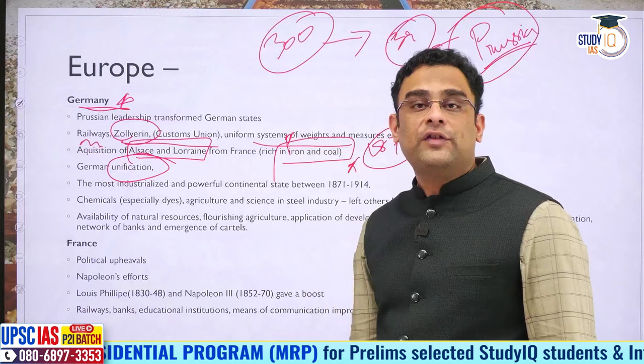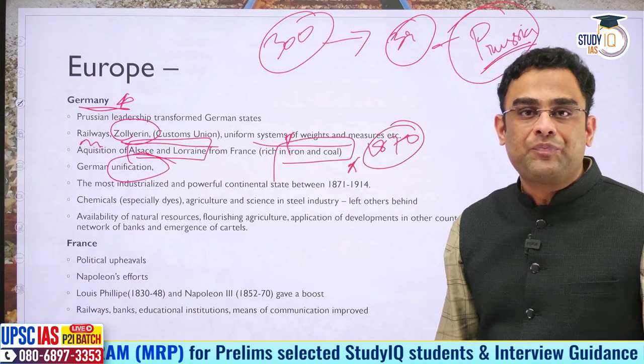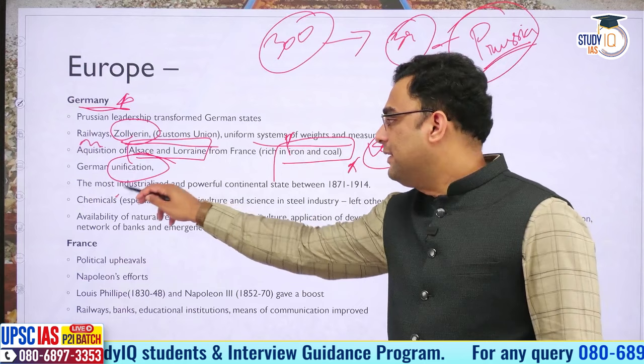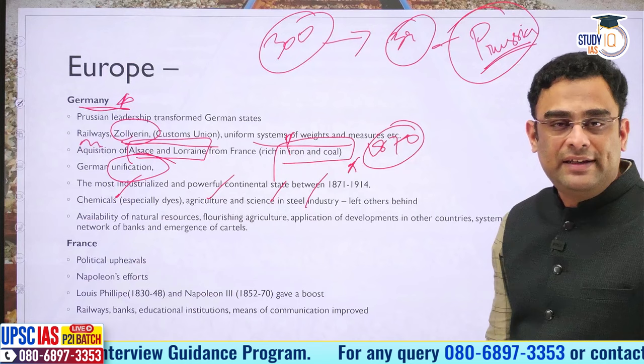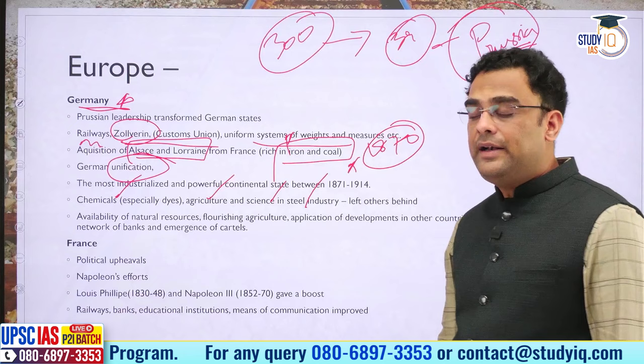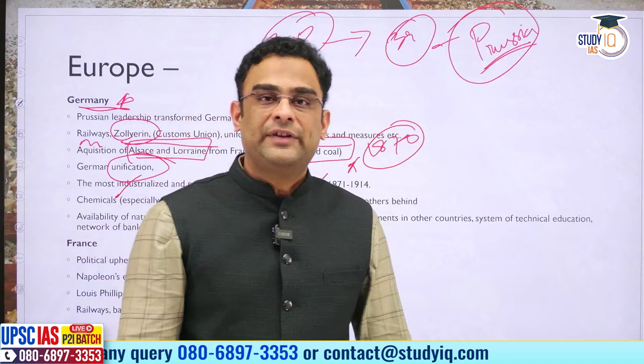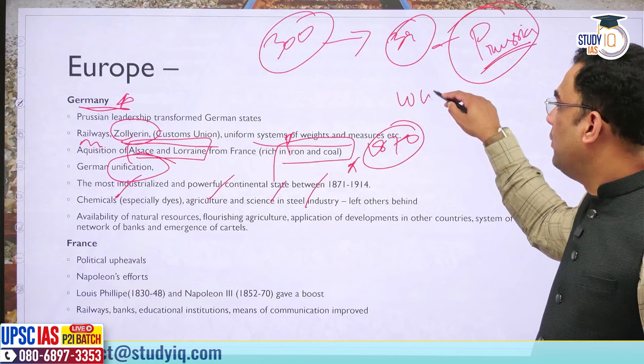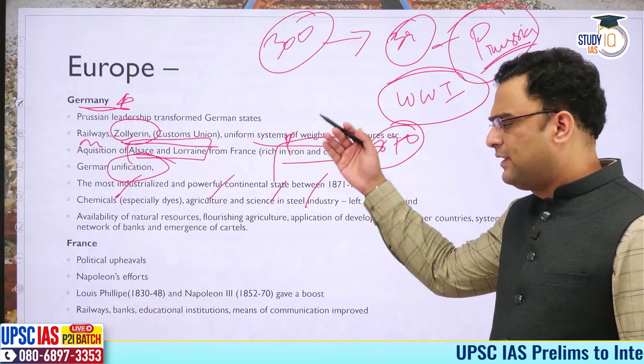Alsace and Lorraine were snatched from France in 1870, giving Germany access to iron and coal crucial for industrial revolution. After unification in 1870, Germany focused all its energy on rapid industrialization, and by the 20th century had become a leading industrial power rivaling Britain, overtaking it in chemicals, agriculture, science, and steel industry. This made Britain insecure and would become a major background cause for World War I.